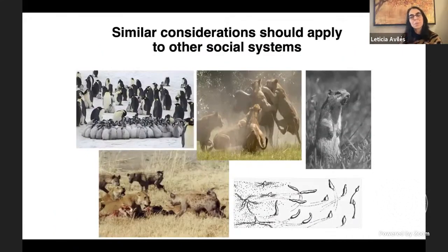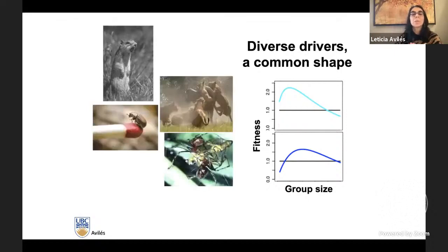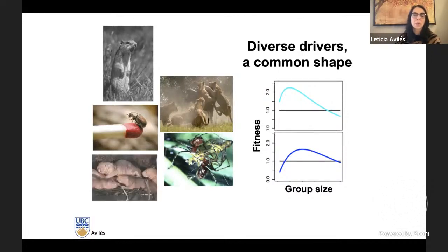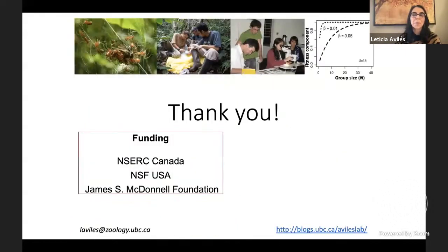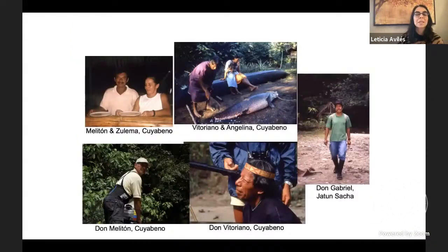There appear to be a similar combination of factors — rain, predators, and insect size — that filter where social spiders can occur. I would suggest similar combinations of factors explain sociality in other organisms too, and that regardless of the specifics, it will boil down to one of two hump-shaped fitness functions explaining the diversity of social systems and why group living and cooperation has arisen across the board. I'd like to thank everyone present and those watching later, and acknowledge my funding sources in Canada and the US, collaborating institutions in Ecuador and Brazil, the field stations and native lands, and the wonderful people who have been like family doing this work in the tropical rainforest. Thank you.